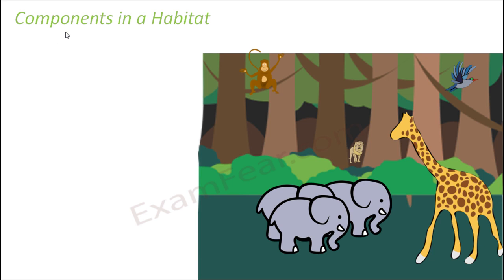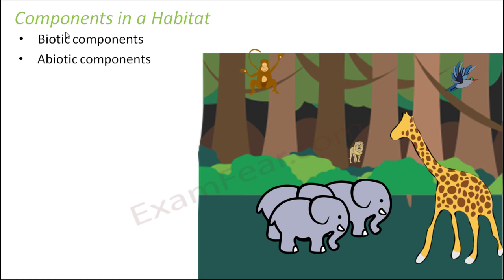Now, components in a habitat — whenever we talk about a habitat, there are two different components which play a very important role. The first component is the biotic component and the second is the abiotic component. Any habitat needs these two components to be complete.